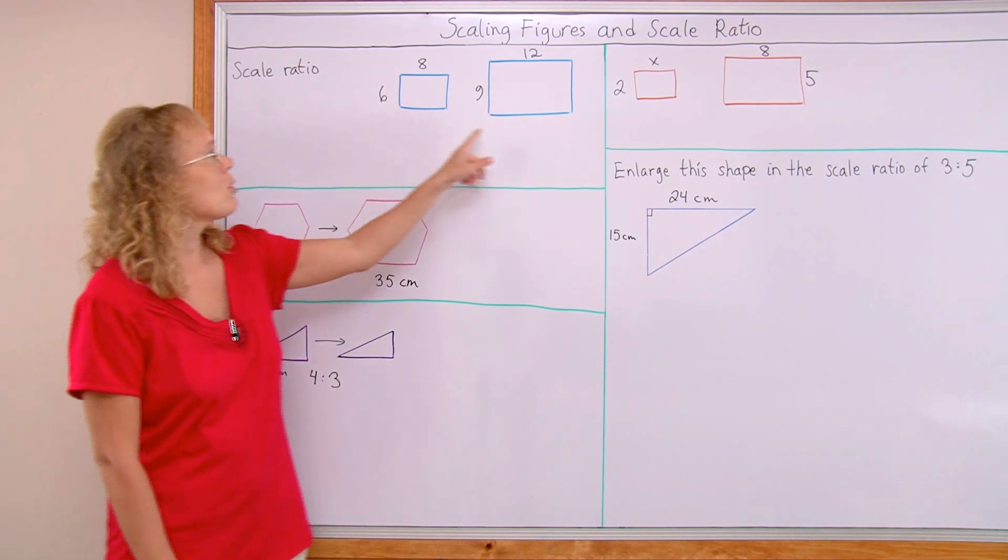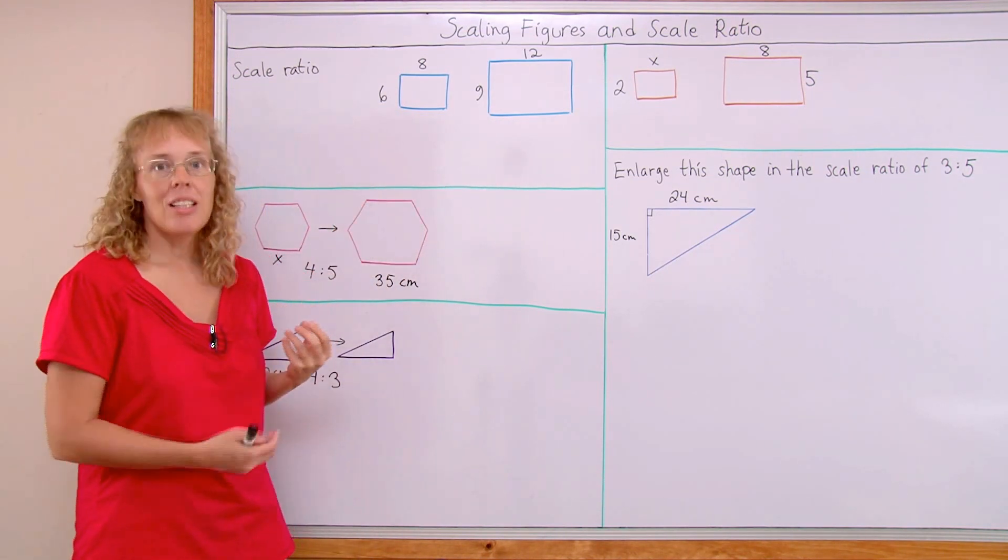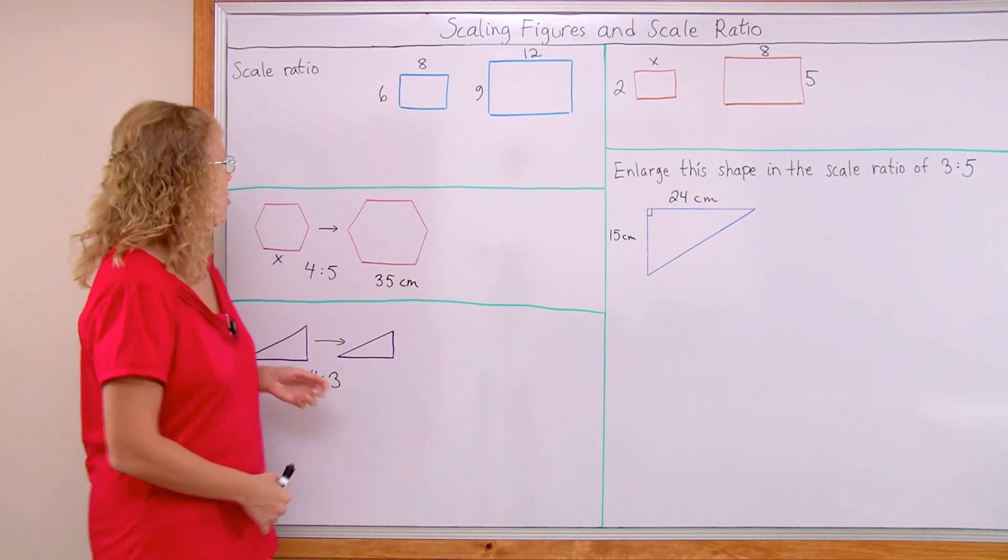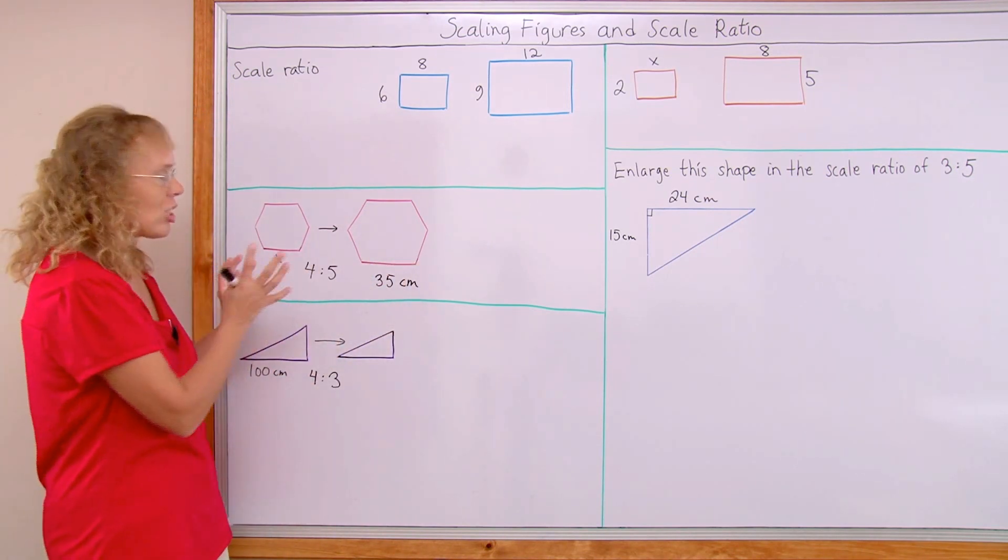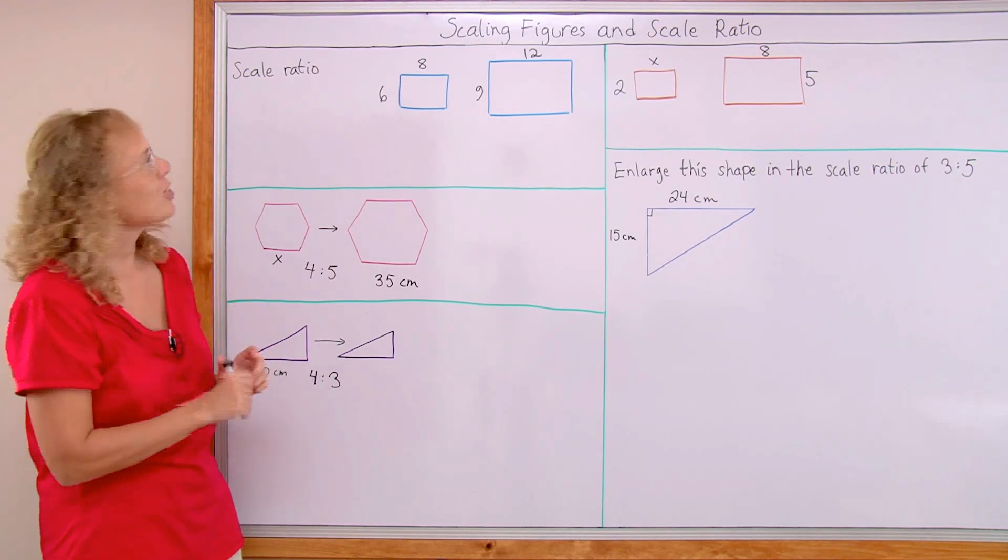For example, these two figures are similar, the rectangles are similar, or these two hexagons are similar hexagons because their basic shape is the same even though one is smaller, one is bigger.